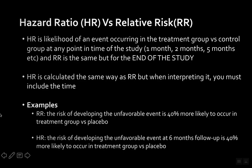Hazard ratio versus relative risk: hazard ratio is the likelihood of an event occurring in the treatment group versus the control group at any point in time during the study — one month, two months, five months, etc. Relative risk is the same but calculated at the end of the study only. So if the study is one year, you don't assess the likelihood until the end.